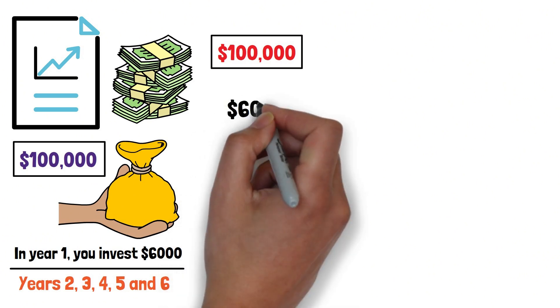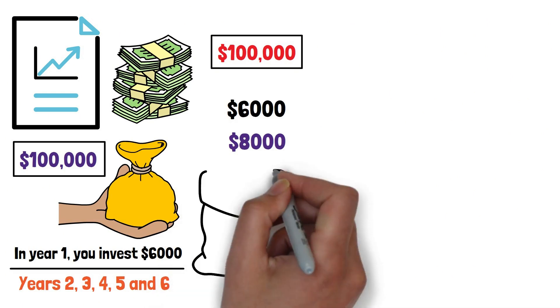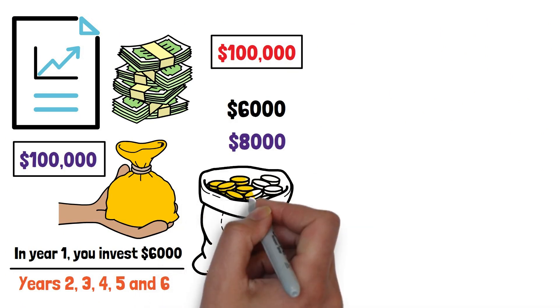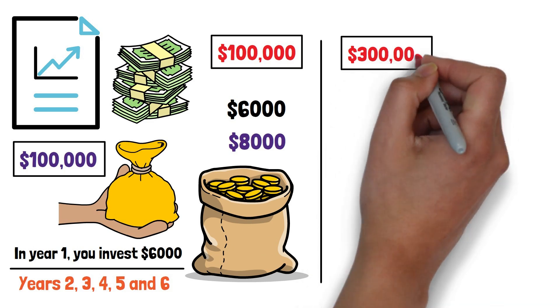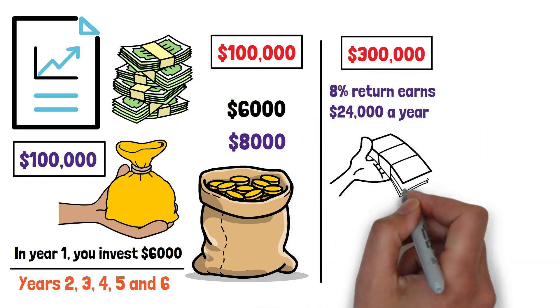But once you hit $100,000, the equation flips. You invest $6,000 and compounding adds $8,000. Your money is finally working harder than you are. At $300,000, an 8% return earns $24,000 a year, four times what you contributed.